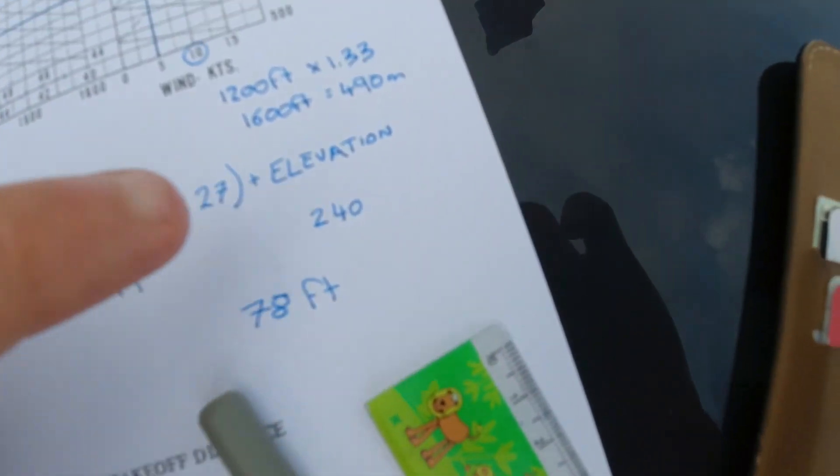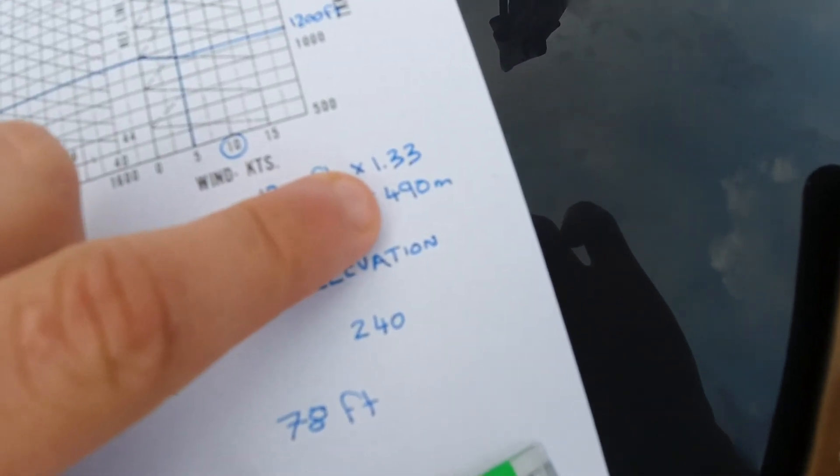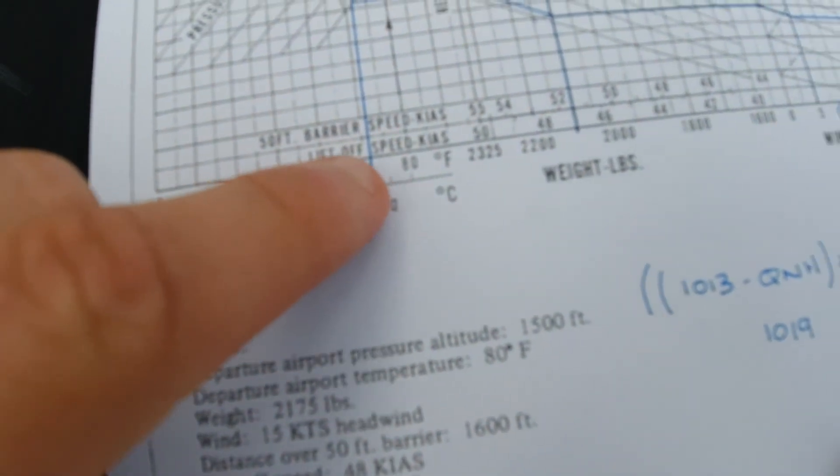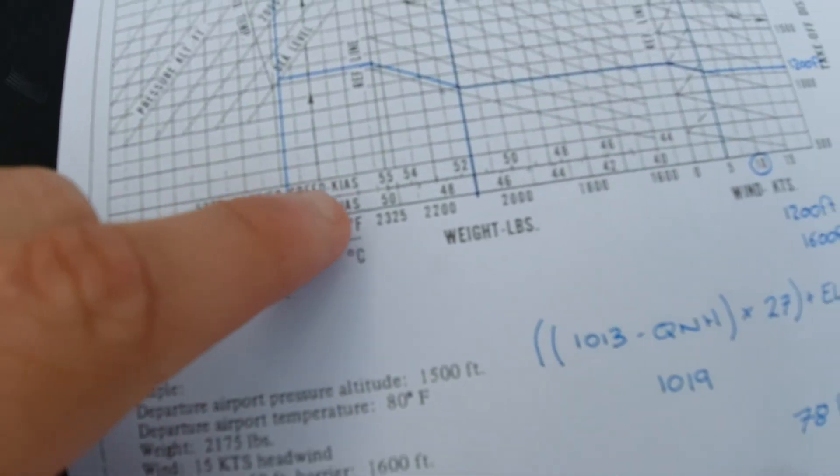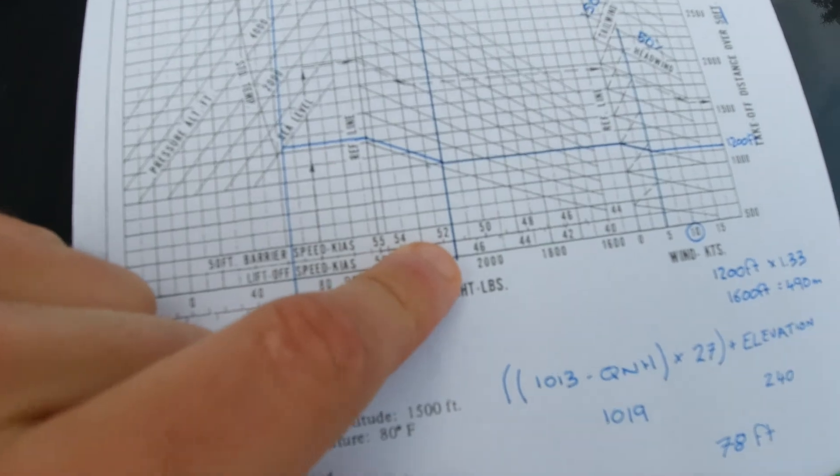Now having completed this graph, I've got three different figures that I'm going to work with. The first of which is my takeoff distance, 490 metres, second of which is my lift-off speed of 47 knots, and the third of which is my 50 foot speed, which is, we'll call it 52 knots.